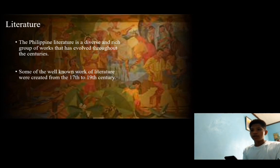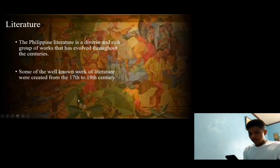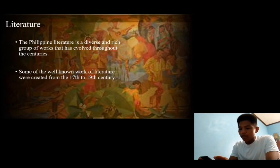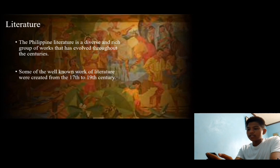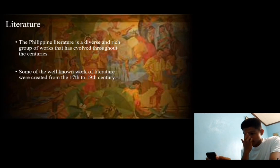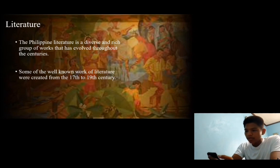Some of the well-known works of literature were created from the 17th to 19th century. One of these is the famous epic about a magical bird, the Ibong Adarna, which was claimed to be written by Jose de la Cruz or Huseng Sisiw. Another is Francisco Balagtas, one of the country's prominent Filipino poets, named as one of the greatest Filipino literary laureates for his contribution to Philippine literature. His greatest work, Florante at Laura, is considered one of the masterpieces of Philippine literature, which Balagtas wrote during his imprisonment.